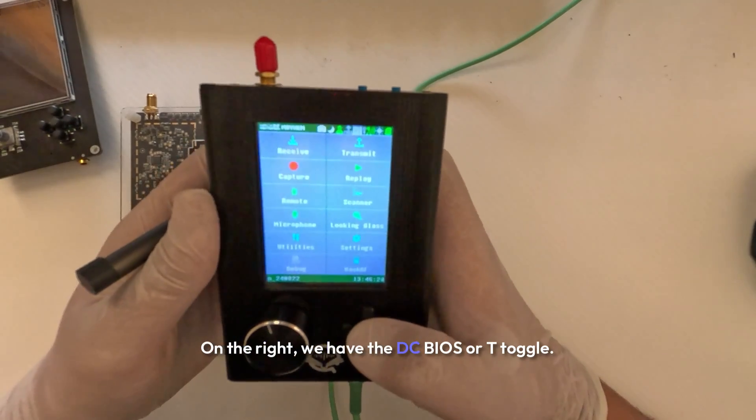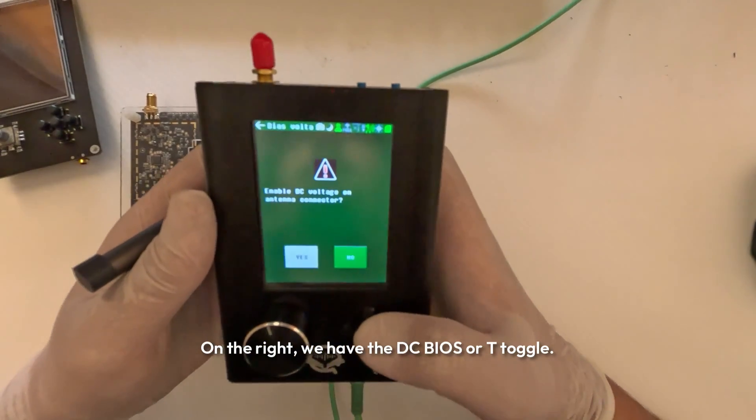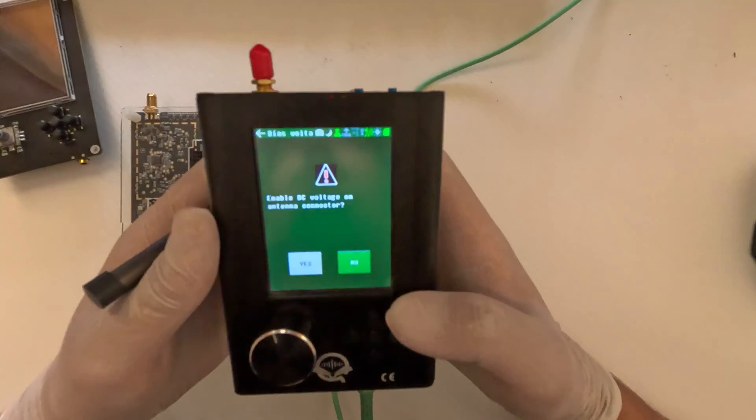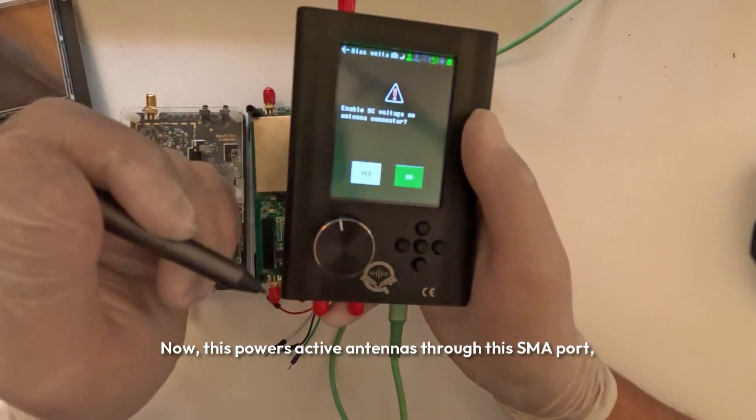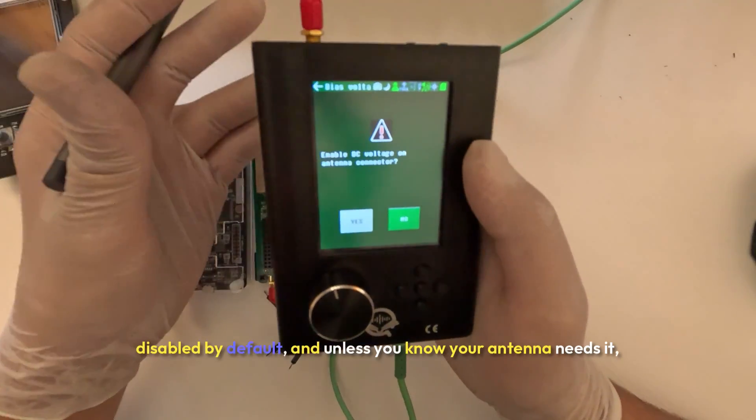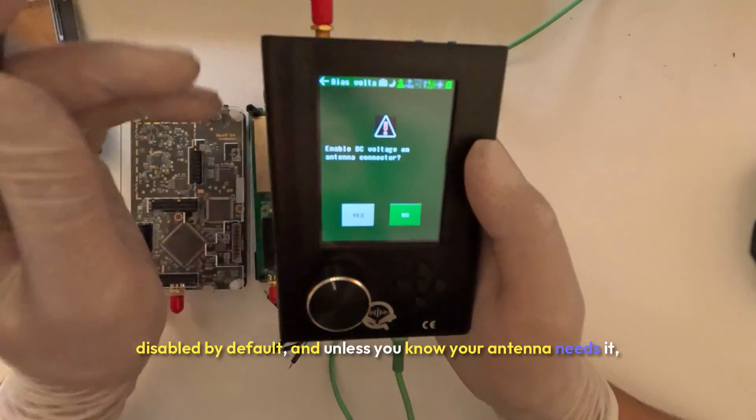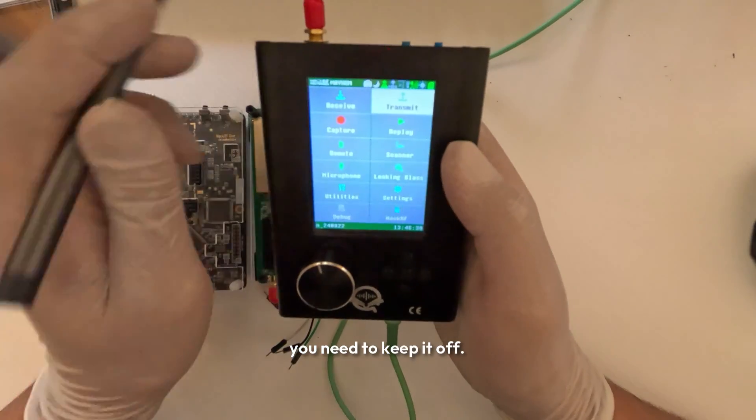On the right we have the DC bias or bias-T toggle. This powers active antennas through this SMA port, disabled by default. Unless you know your antenna needs it, you need to keep it off.